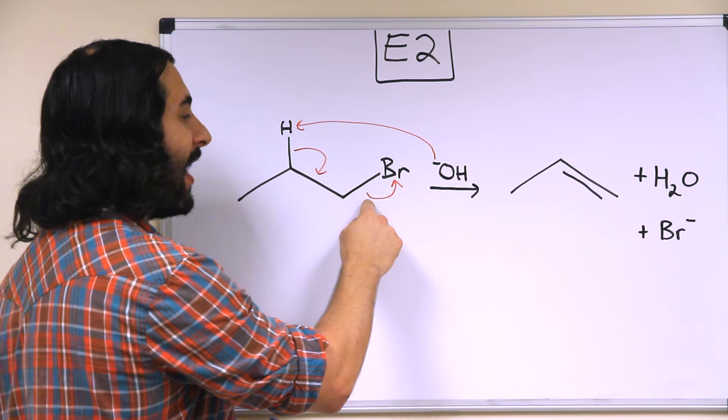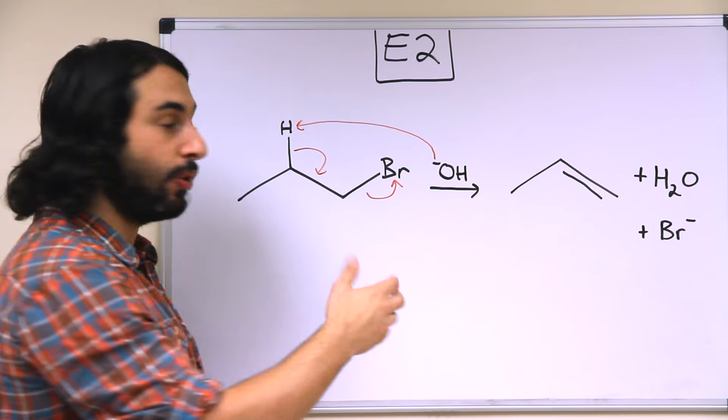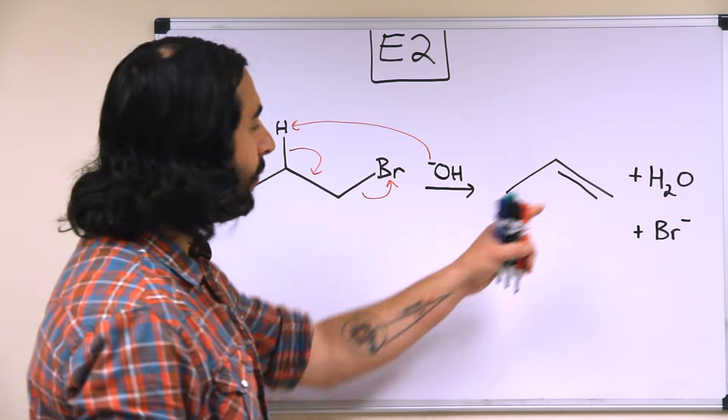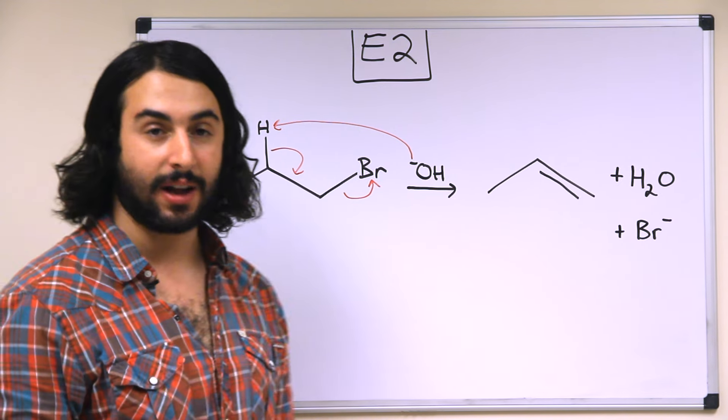And then the electrons in the carbon-hydrogen bond are going to go and form the double bond between these two carbons. And then just as with a substitution reaction, a leaving group must leave. So this is what's left, propene, and then we have water and the bromide ion.